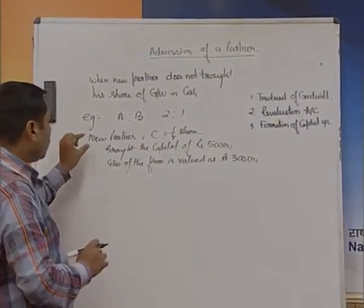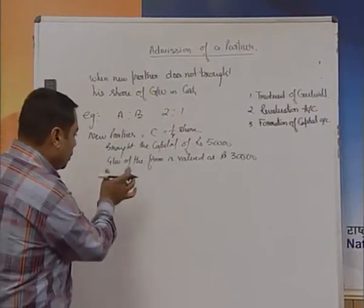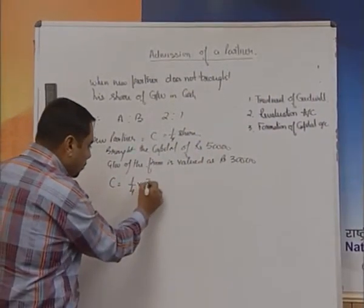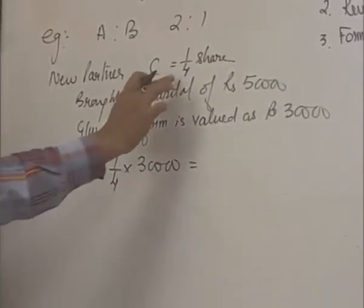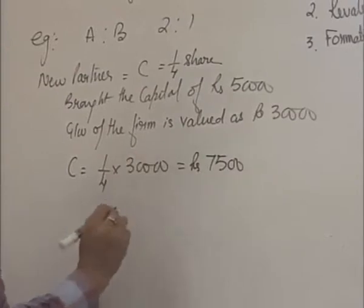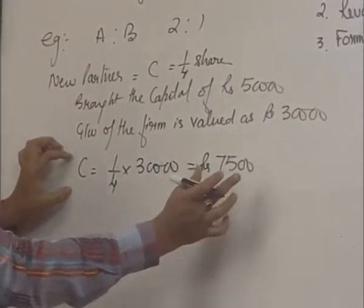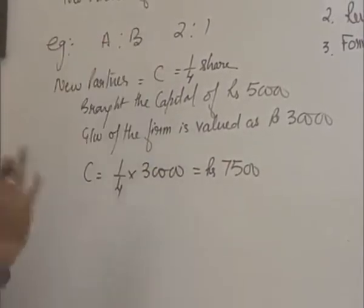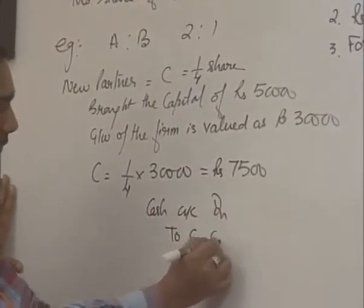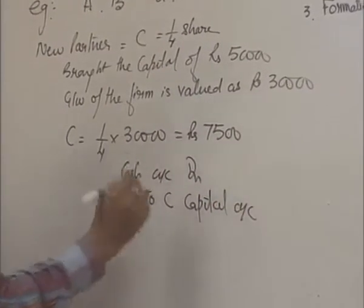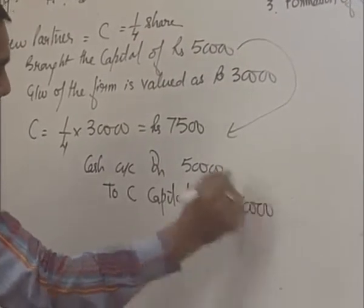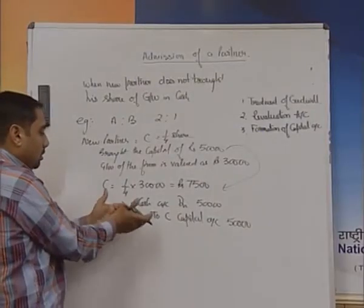The very first thing — calculate what is going to be C's share in goodwill, because this is the goodwill of the whole firm. C is going to join for one-fourth share. So one-fourth of 30,000 comes out to be rupees 7,500. C was supposed to bring this amount of goodwill in cash, which he has not brought as per the question. So our first entry is cash account debit to C capital account — because only the capital has been brought — for 50,000. Narration: capital brought by C in cash.